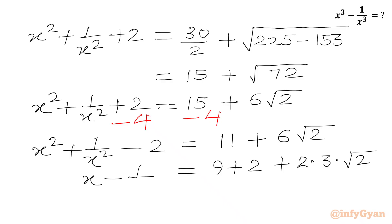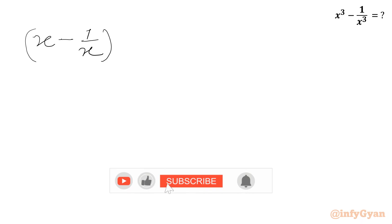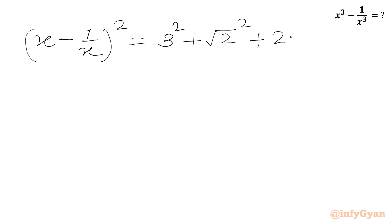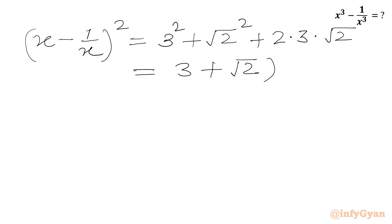We can write this as a perfect square of x minus 1 over x. We write 9 as 3 square and 2 as root 2 square, so x minus 1 over x whole square equals 3 square plus root 2 square plus 2 times 3 times root 2, which is 6 square root 2. This is 3 plus square root 2 whole square, since a square plus b square plus 2ab equals a plus b whole square.